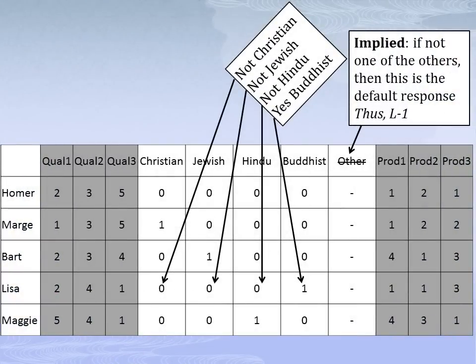So, we've given a survey to the Simpson family. One of the questions asked about religion. Starting from the bottom: Maggie is Hindu, Lisa is Buddhist, Bart is Jewish, Marge is Christian, and Homer — because Homer is not one of the other four religions, he is by default other. Thus, we don't need to include this last category in our dataset. Dummy variables are a slightly more complex concept; we'll discuss them in more detail in future lectures — for now we just wanted to expose you to the concept.